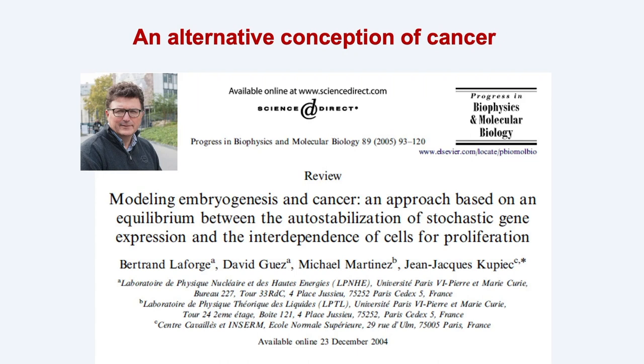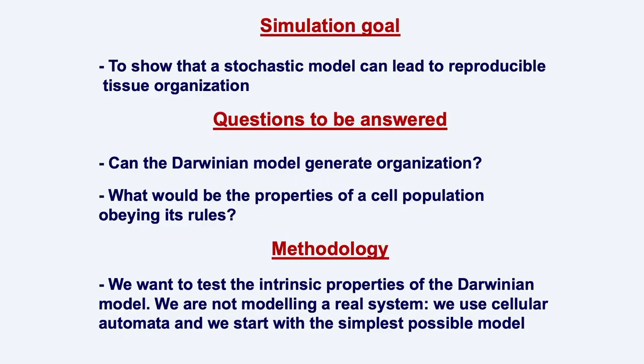Now I am going to switch to the second part of my talk and present the results of the computer simulation of this model of cell differentiation. I did this work in collaboration with Bertrand Laforge, who is a physicist at the University of Paris and who will talk later this morning. Computer simulation can be done in various ways with different goals. Our initial goal when we did this work was to evaluate the relevance of the Darwinian model of cell differentiation as a theoretical framework.